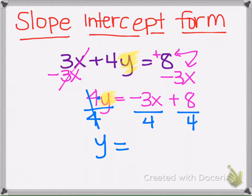So 4 cannot go into 3 evenly, so we're going to leave it in simplified form, which it already is, so negative 3 fourths. And then 8 divided by 4, 8 divided by 4 is 2, positive 2.